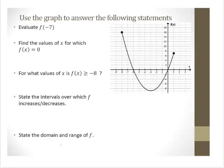Here's another graph — let's answer some questions based on it. Evaluate f(−7). We have a standard scale here. When the input is −7, the output appears to be 7, so f(−7) = 7. Find all values of x for which f(x) = 0. Recall that means the output is 0. I see two points where the output is 0: x = −6 and x = 0.